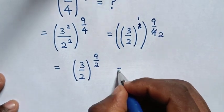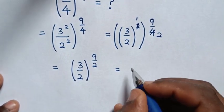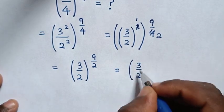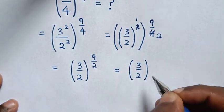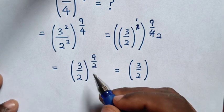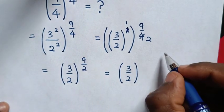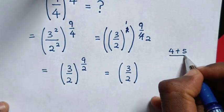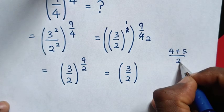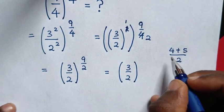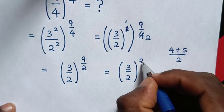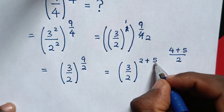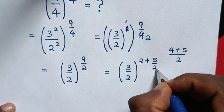Then it will be equal to 3 over 2, in bracket, power of 9 over 2. From here, 9 is same as 4 plus 5, then over 2: 4 divided by 2 is 2, plus 5 divided by 2 is 5 over 2.